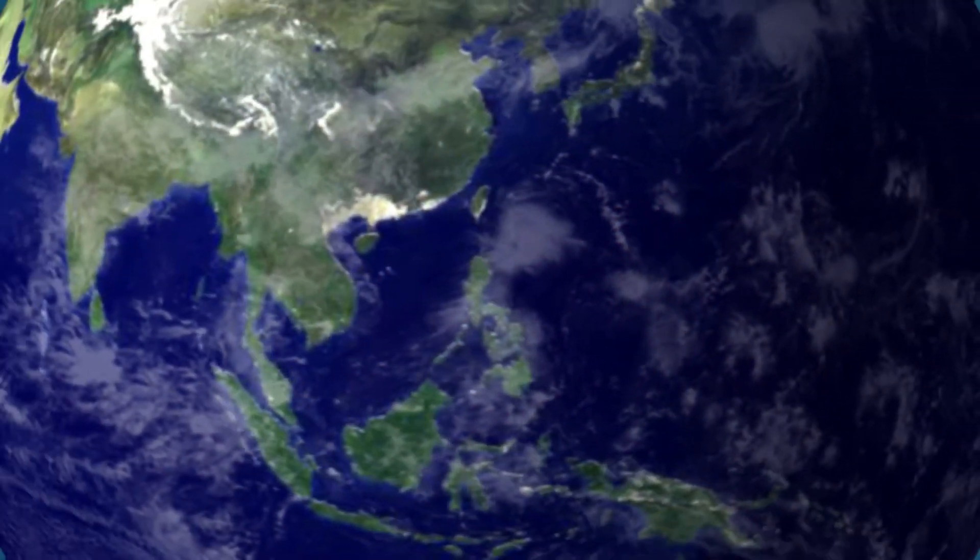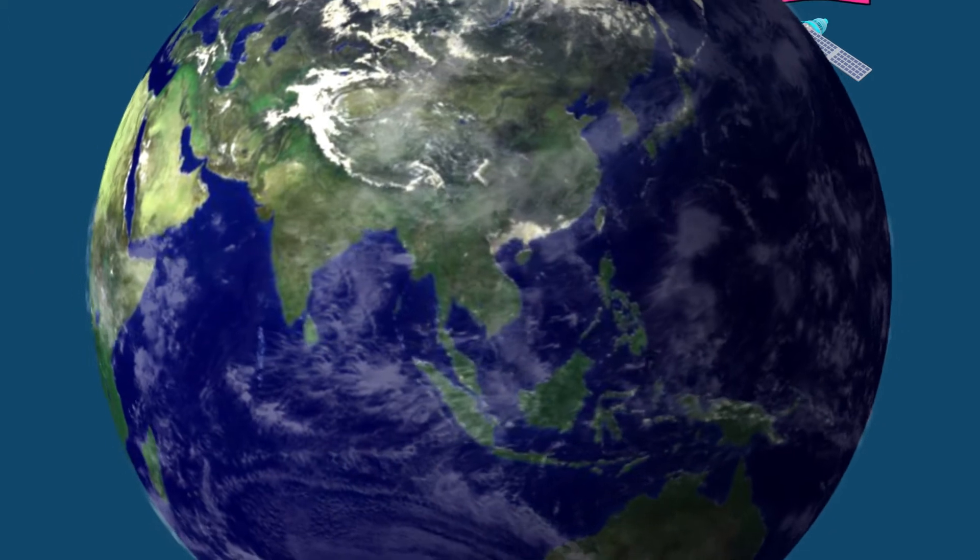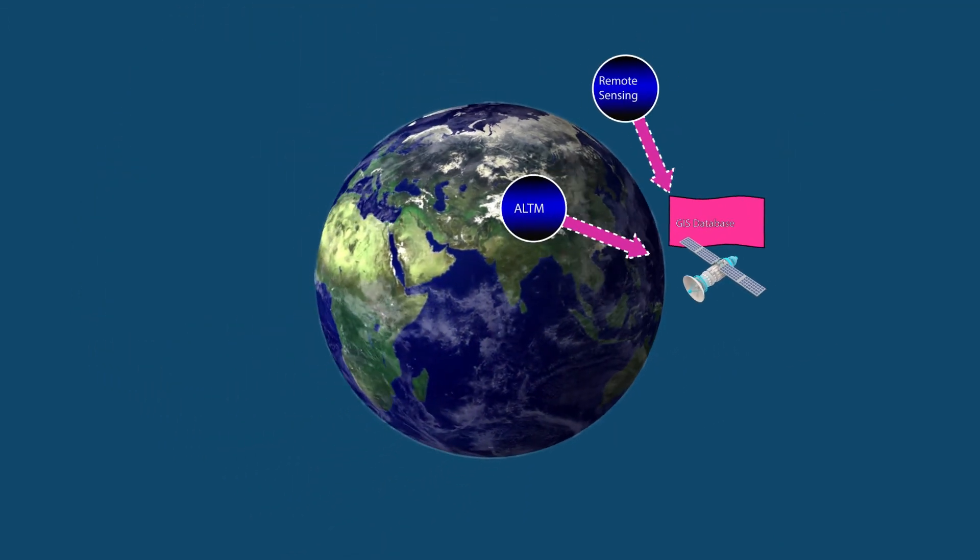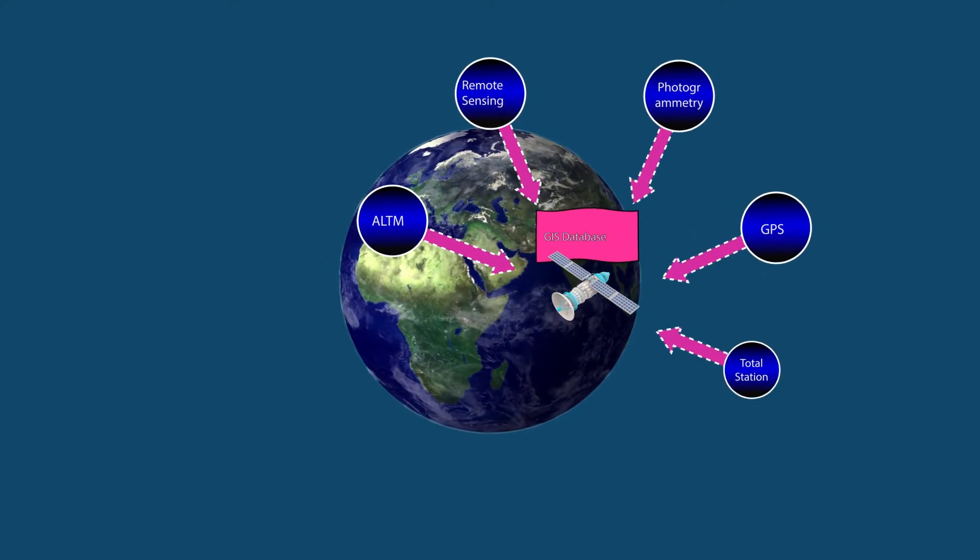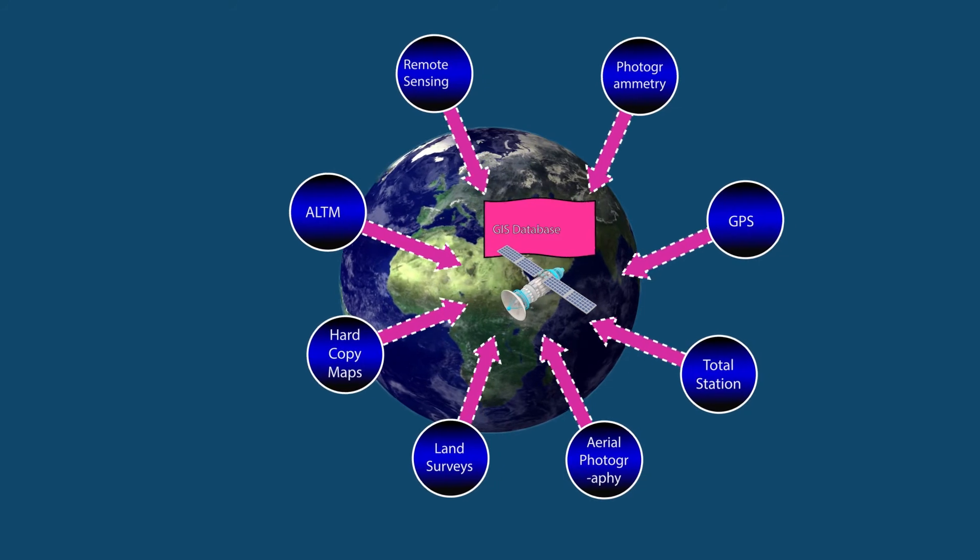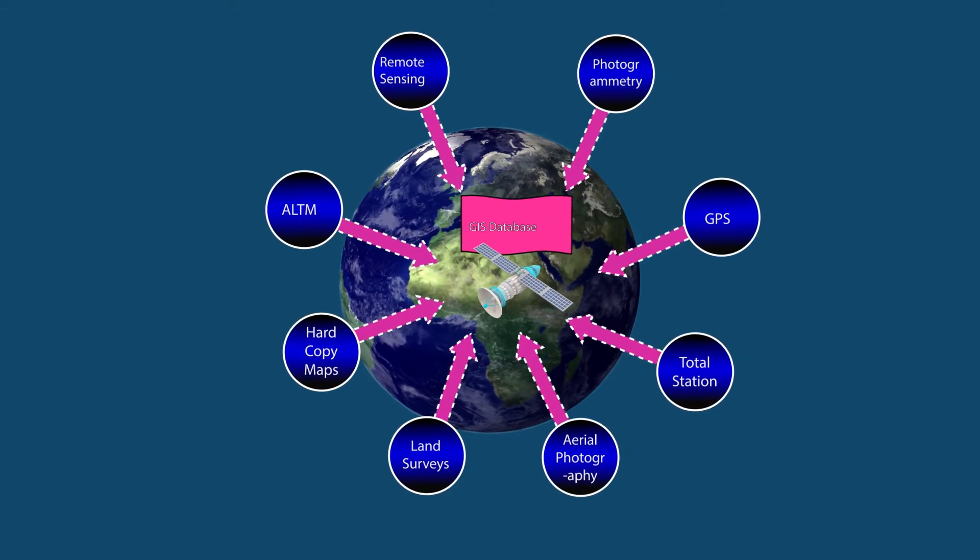GIS data can be gathered from multiple sources like satellite, ALTM, remote sensing, photogrammetry, GPS, total station, aerial photography, land surveys, hard copy maps, existing paper maps, and web services.